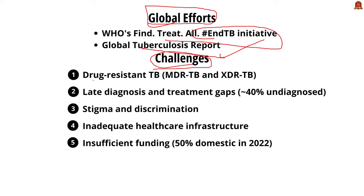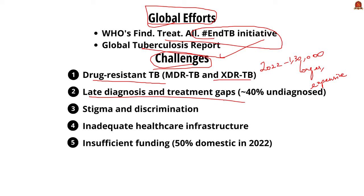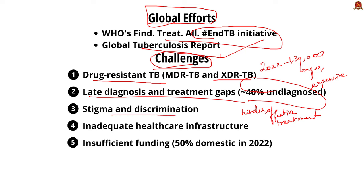Key challenges to tackle TB: First, drug-resistant TB — MDR-TB and XDR-TB are major concerns. In 2022, India had around 1,30,000 MDR-TB cases. Treatment for MDR-TB is longer, more expensive, and less effective, leading to higher mortality rates. Second, late diagnosis and treatment gaps — approximately 40% of TB cases remain undiagnosed or unreported, hindering effective treatment and control. Delayed diagnosis increases transmission and worsens patient outcomes. Social stigma associated with TB leads to delays in seeking diagnosis, treatment, and completing the treatment course, contributing to drug resistance.